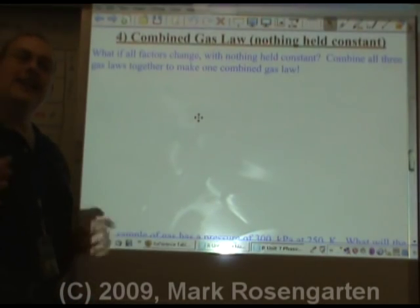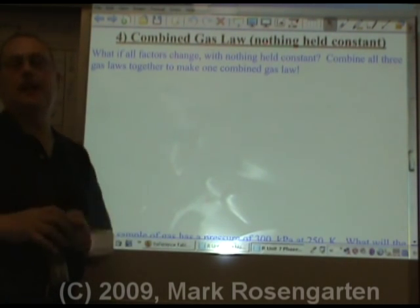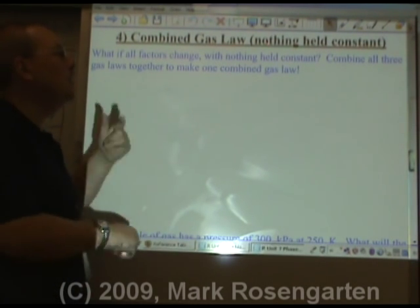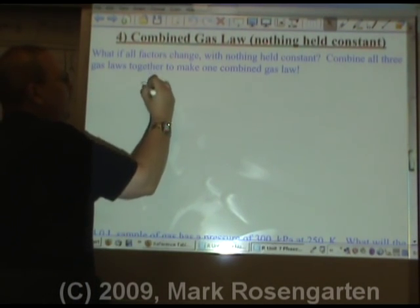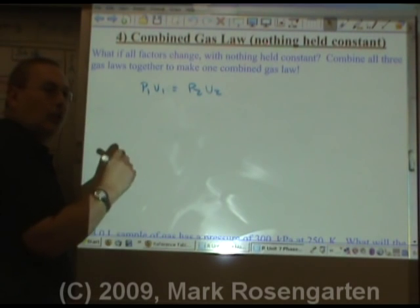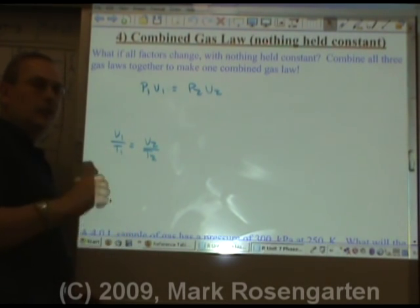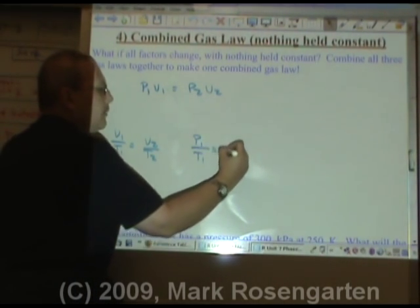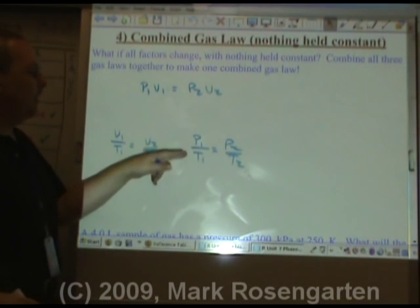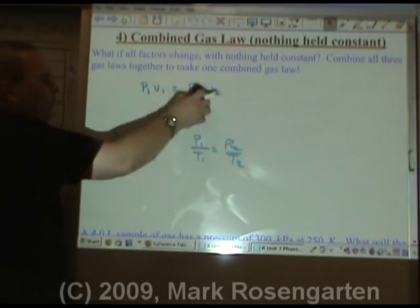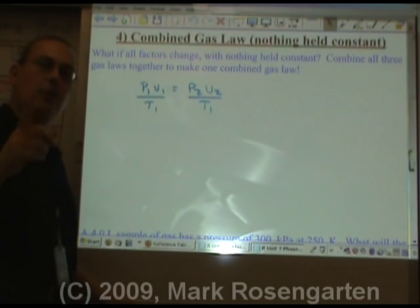You can combine these gas laws together into one combined gas law, which you can use instead of three separate gas laws. Boyle's law is P1V1 = P2V2; Charles' law is V1/T1 = V2/T2; Gay-Lussac's law is P1/T1 = P2/T2. Since pressure and volume are multiplied by each other and both divided by temperature, we can combine all three into one combined gas law. If something is held constant, you simply ignore that variable.